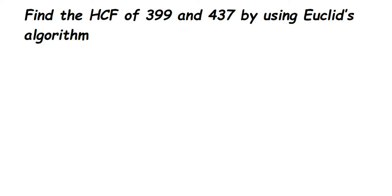Hello everyone, here we have a question on HCF. The question is: find the HCF of 399 and 437 by Euclid's algorithm. Sometimes it's called Euclid's algorithm, sometimes it's also called Euclid's division. Both are the same.